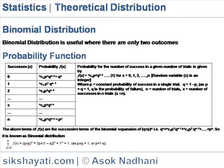The table shows the success x and probability f(x) for various values of x. Like when success 0 is nC0, p^0, q^(n-0) = q^n. When success is 1, the probability is nC1, p^1 into q^(n-1) and like that.